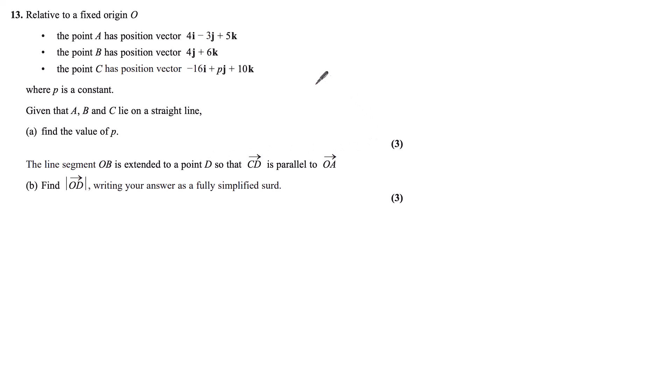The first thing I'm going to do is write my position vectors in column notation. So point A has position vector 4i minus 3j plus 5k. In column notation, that is OA equals (4, -3, 5), with my i, j, and k components. I'll do the same for point B. There are no i's, so just 4 and 6, giving OB as (0, 4, 6).